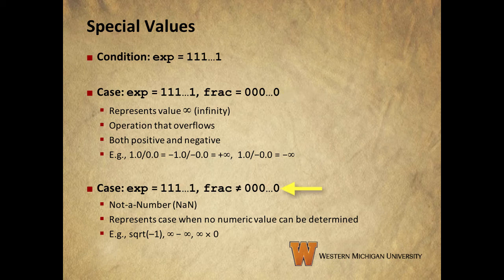In the case where the FRAC field is not filled with zeros, we get a case where no numerical value could be determined or not a number. I do want to call your attention to the examples for where the FRAC field is equal to all zeros. We have some divide-by-zeros that don't actually end up being not a number. These are some of those special cases where the positive and negative 0.0 makes a difference. So, negative 1.0 divided by negative 0.0 or 1.0 divided by 0.0 both evaluate to positive infinity. Whereas, for example, 1.0 divided by negative 0.0 evaluates to negative infinity.